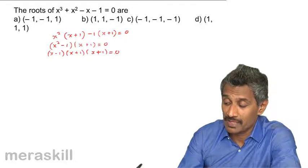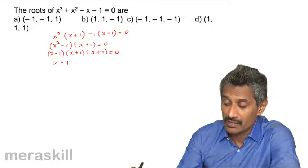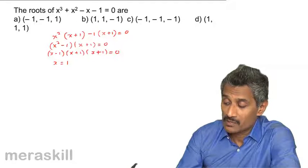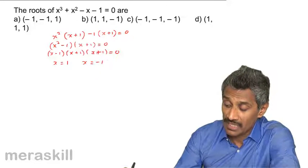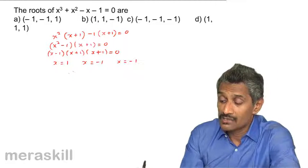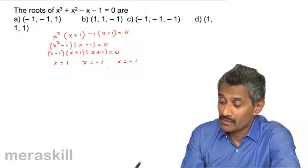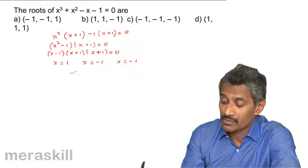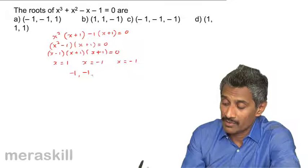Setting each factor to zero: x - 1 = 0 gives x = 1; x + 1 = 0 gives x = -1; and again x + 1 = 0 gives x = -1. So two of the values are -1 and -1, meaning the roots are -1, -1, and 1.